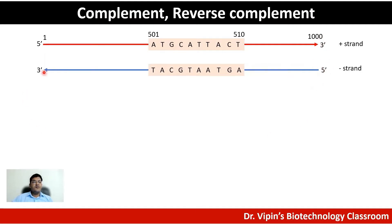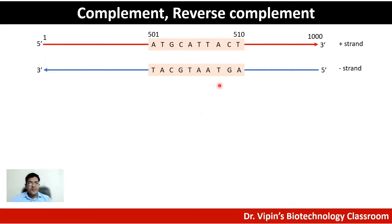The sequence of the minus strand can be directly derived from the plus strand following the base complementarity rule: for adenine you have thymine, for thymine you have adenine, for guanine you have cytosine, and for cytosine you have guanine. An important thing to notice is that the minus strand is anti-parallel to the plus strand, and therefore the orientation of the sequence actually changes. Let's now review the key points discussed so far.